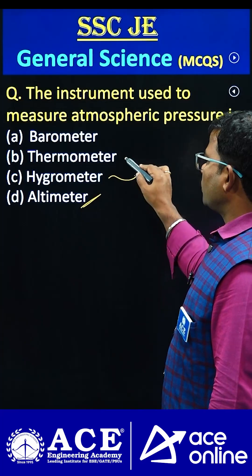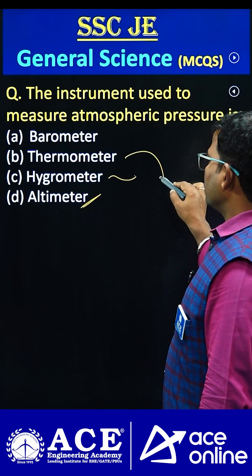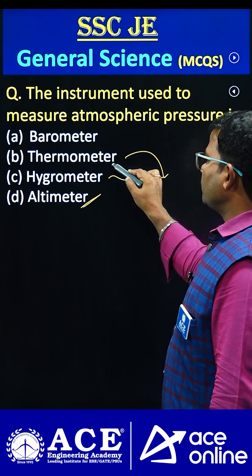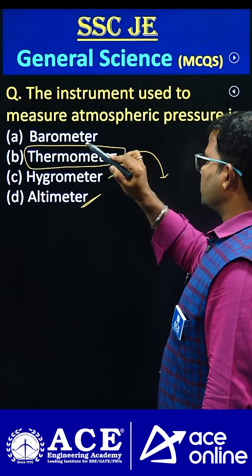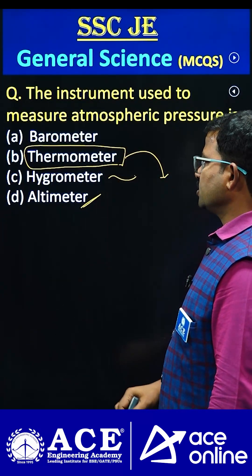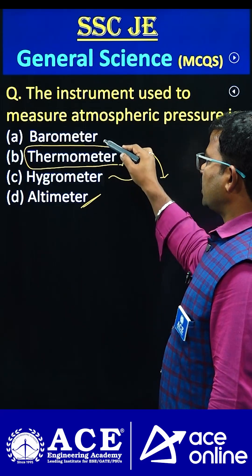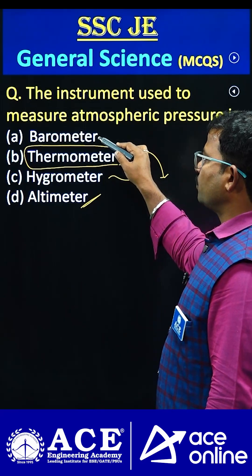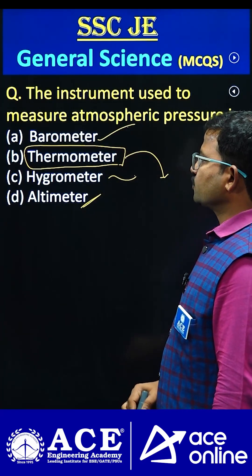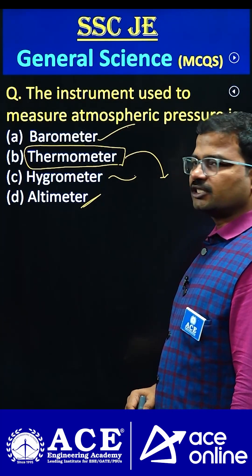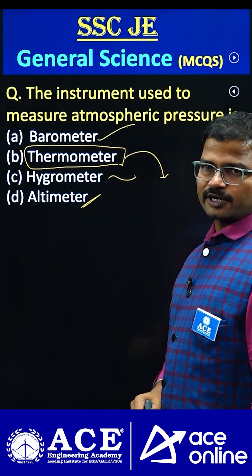Next, thermometer — this can be used to measure the temperature variations. And the last one, barometer — this one is used to measure the atmospheric pressure.